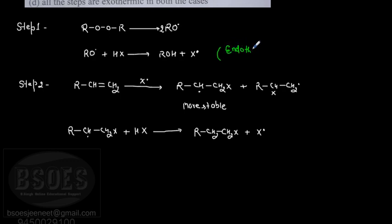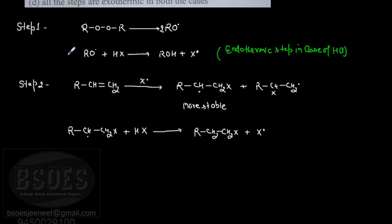In the case of HCl, the second part of the first step - where the free radical reacts with HCl to form the X free radical - this step is endothermic in nature, meaning heat needs to be supplied for this step to proceed.